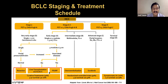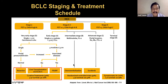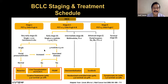The intermediate BCLC stage consists of multinodular tumors with good performance status, where embolization procedures including TACE and newer procedures like TARE and SBRT are used, with three-year survival around 20-40%. Advanced stage C or terminal stage D are treated primarily with chemotherapeutic agents with poorer survival. The key message is to detect tumors early for curative or ablative treatments with good long-term survival.